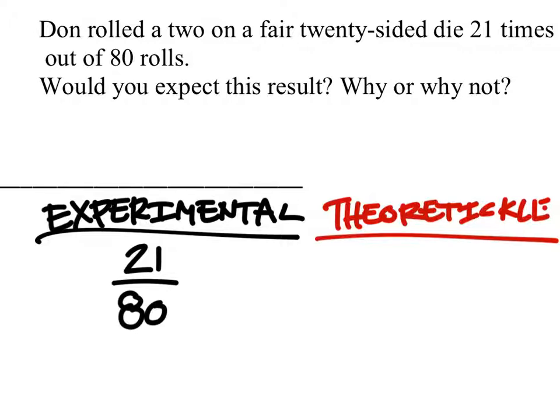So the theoretical probability, it's a 20-sided die, so it's going to be 1 out of 20. How many of those sides are a 2? One.